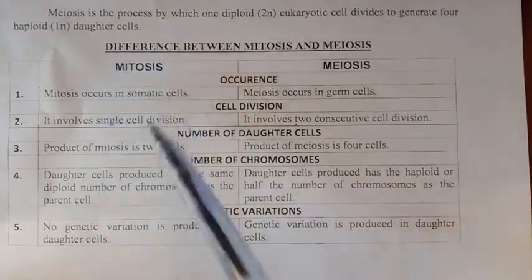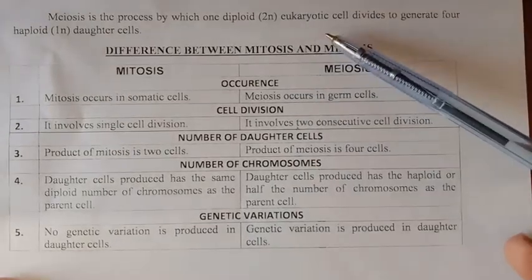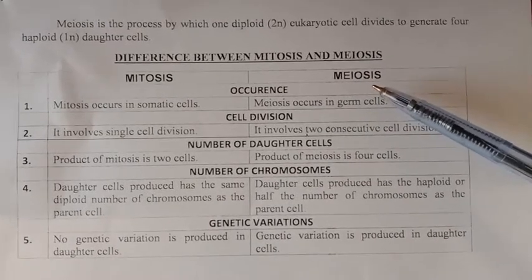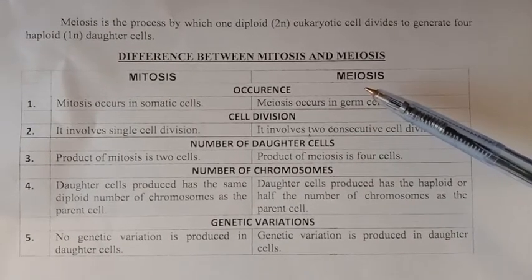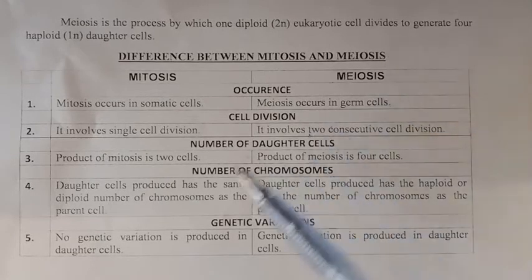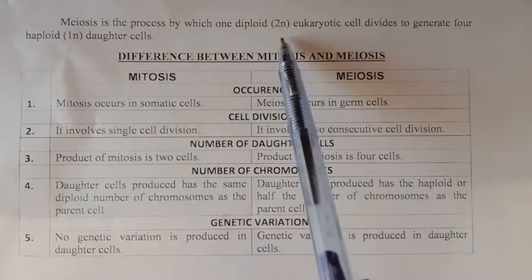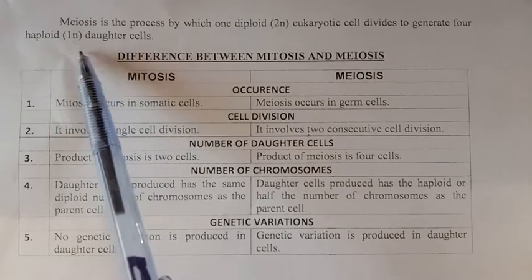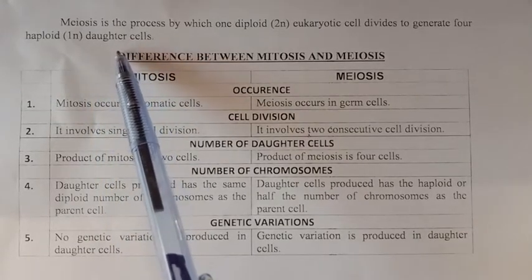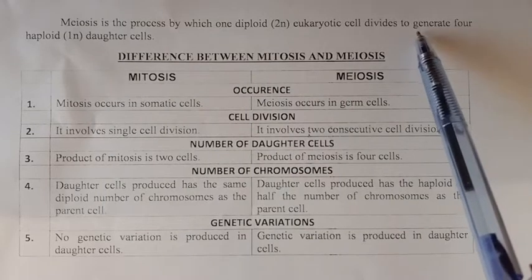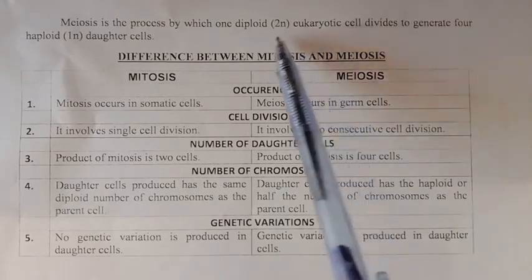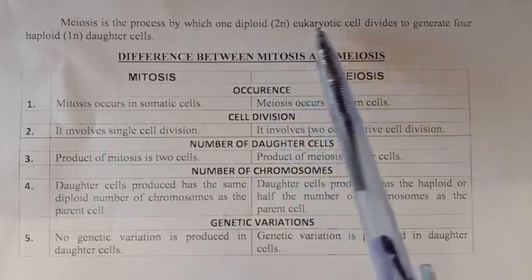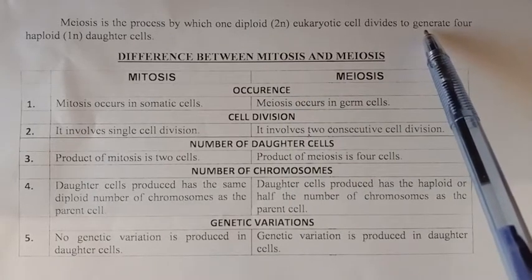Meiosis is the process by which one diploid cell — diploid means the cell contains the complete set of chromosomes, for example 46 in humans — divides to produce four daughter cells. Meiosis 1 and meiosis 2 both take place, producing four daughter cells from one diploid cell. Haploid cells are those that contain half the number of chromosomes.